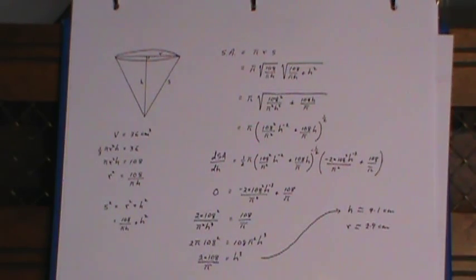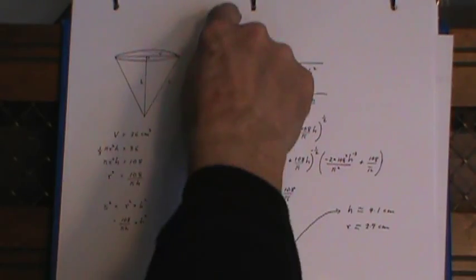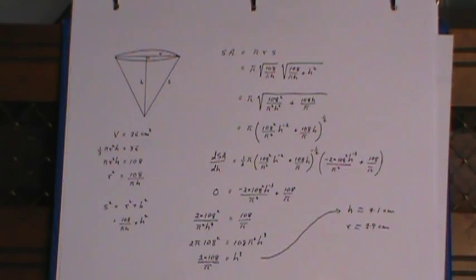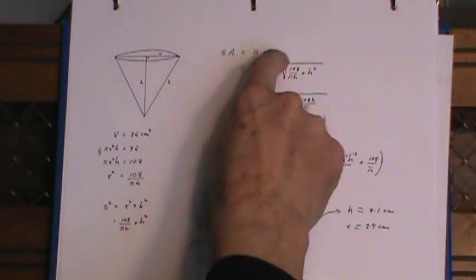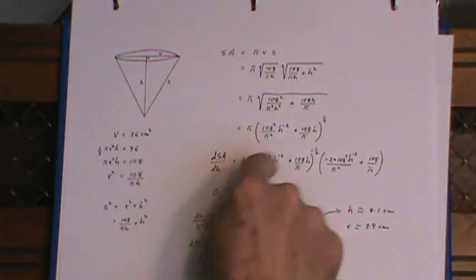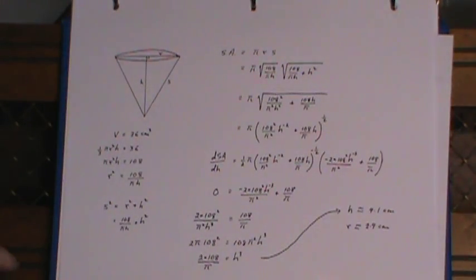So it's always a matter of trying to get what you want to maximize or minimize in terms of one variable, and that's what all of this was about right here, trying to get surface area eventually in terms of h.